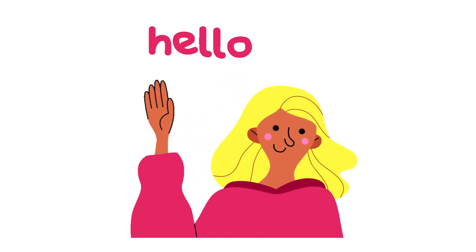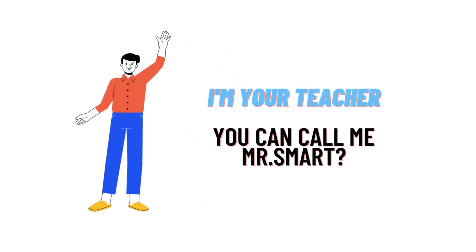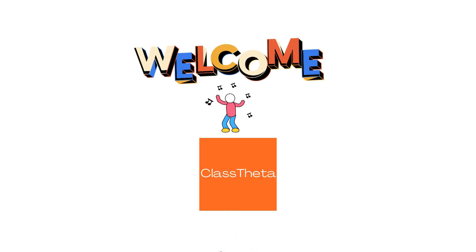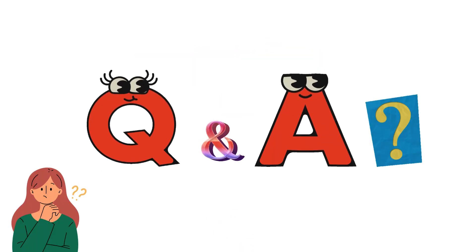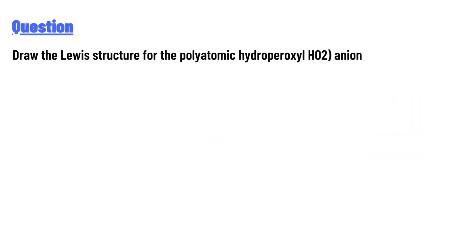Hello everyone, how are you? I am Akrash, your teacher here, and I will teach you different questions and their answers. So I welcome you on ClassTheta.com. Our today's question is: Draw the Lewis structure for the polyatomic hydroperoxyl HO2 anion.